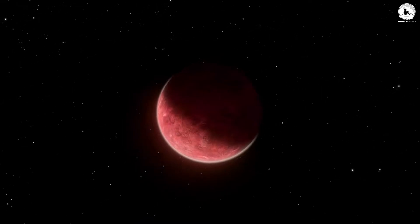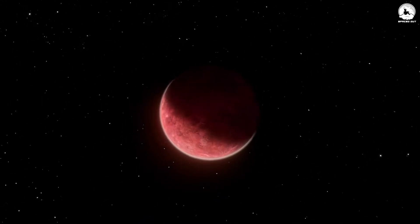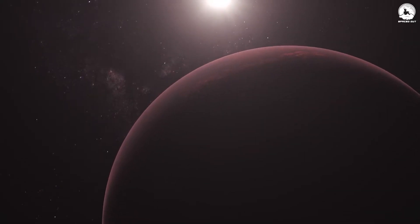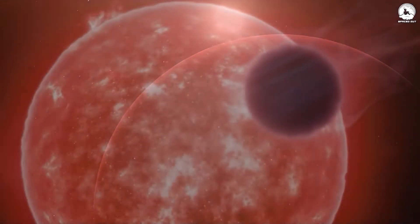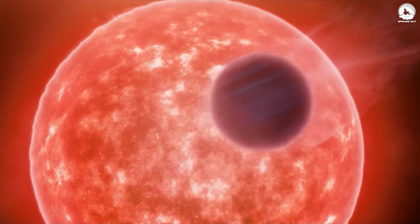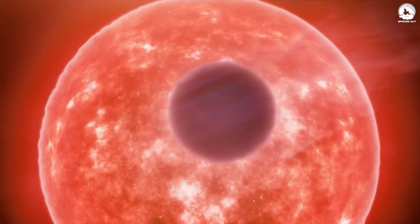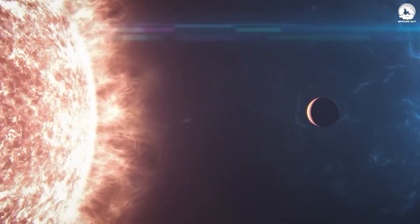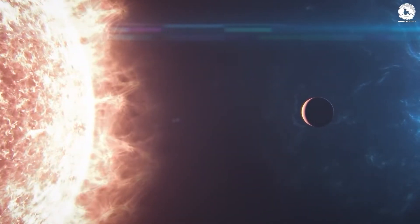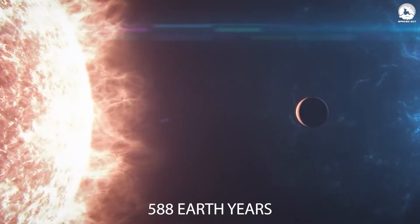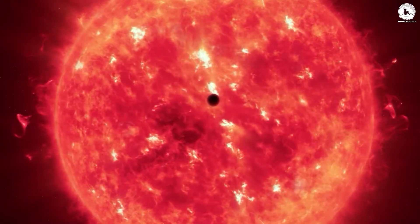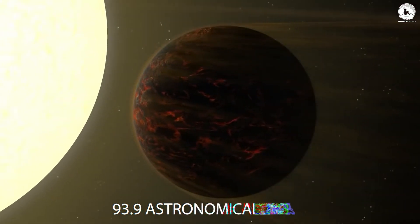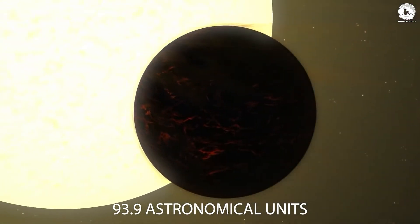As for the colossal planet, it's a gas giant with a mass equivalent to nine times that of Jupiter. Picture the sheer enormity of this celestial behemoth. What's particularly intriguing is that this massive planet, known as AB Aurigae b, embarks on a journey around its parent star that spans almost 588 Earth years. This extensive orbit could be attributed to its considerable distance from the star, positioned at 93.9 astronomical units.